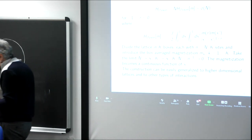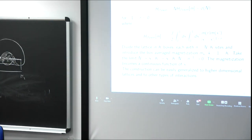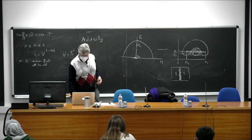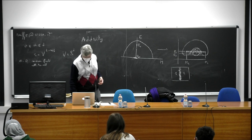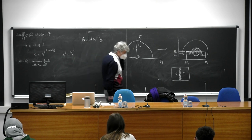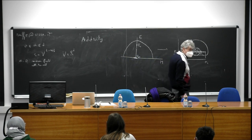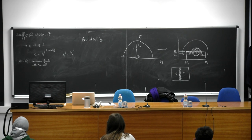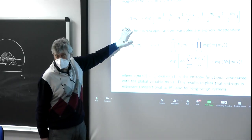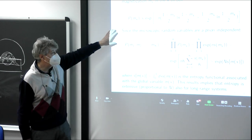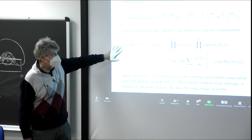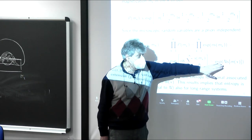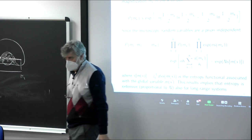I can prove that the N-body Hamiltonian of Dyson can be written as N times this functional — a double integral in x between 0 and 1 — plus a correction which is little-o of N, so it goes to zero relative to N and can be neglected in the large N limit.